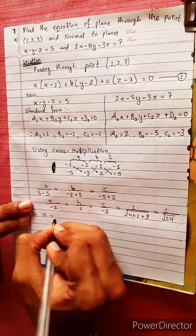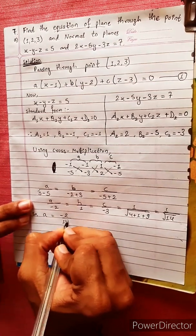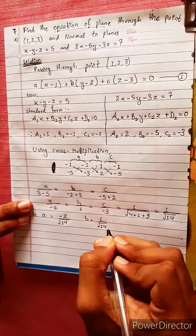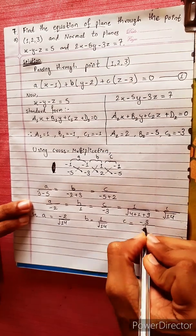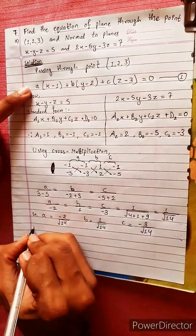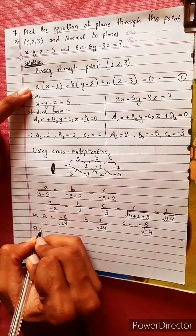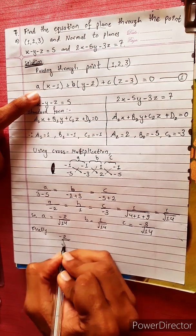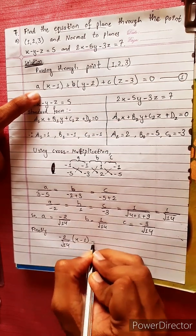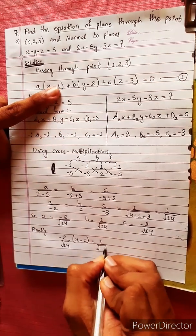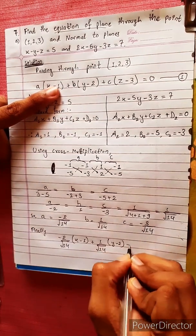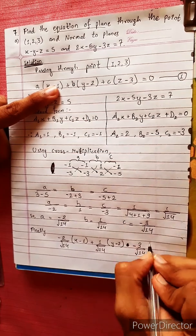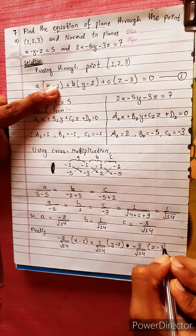So the normalized values are: a = -2/√14, b = 1/√14, c = -3/√14. Substituting into the plane equation: (-2/√14)(x-1) + (1/√14)(y-2) + (-3/√14)(z-3) = 0.